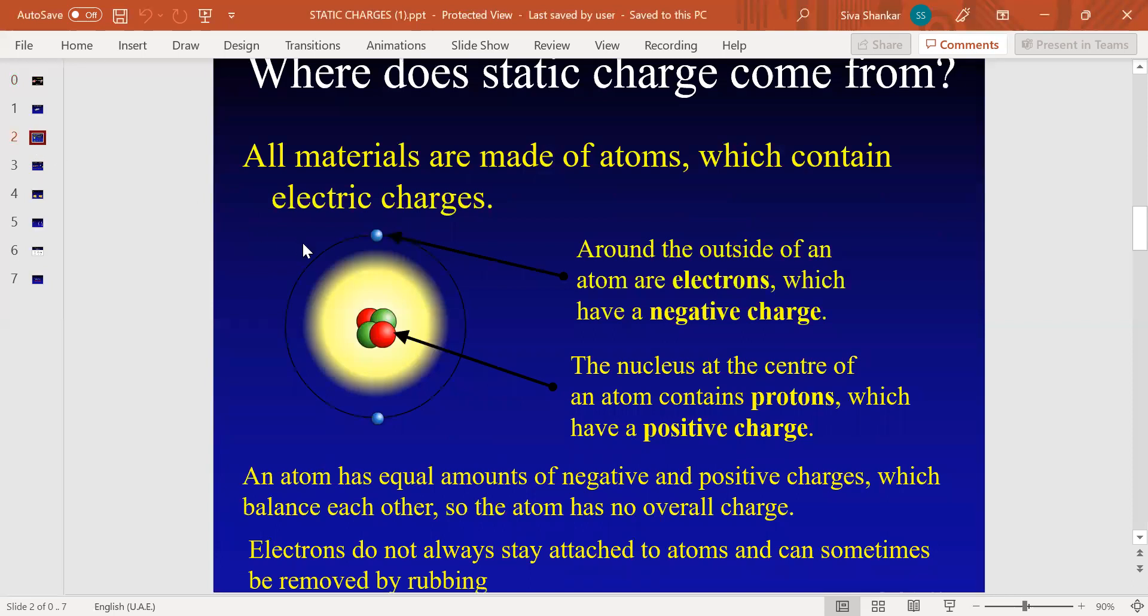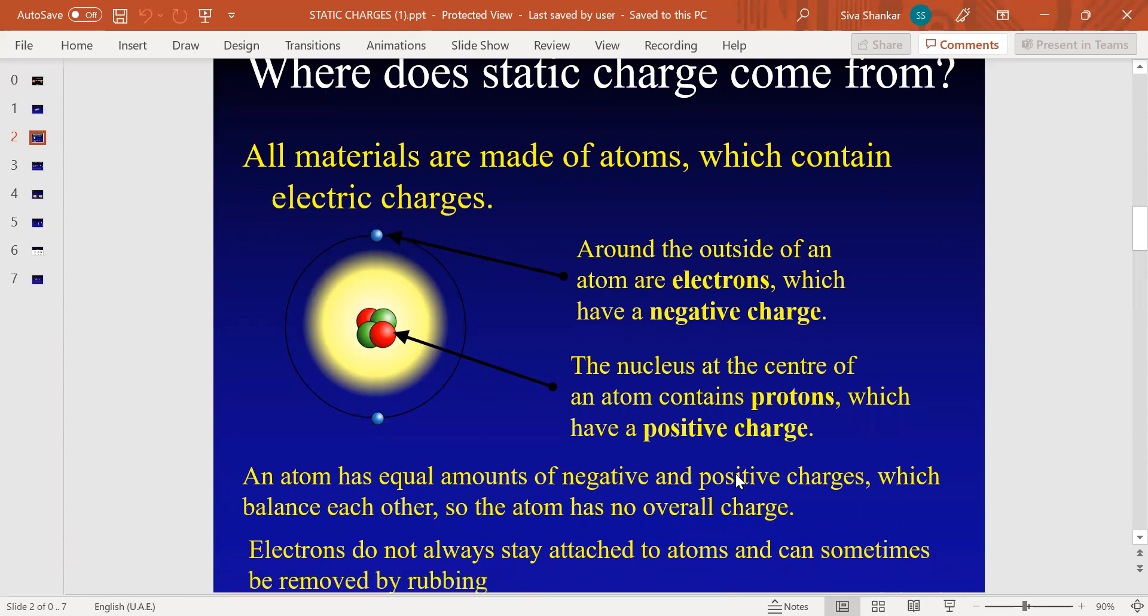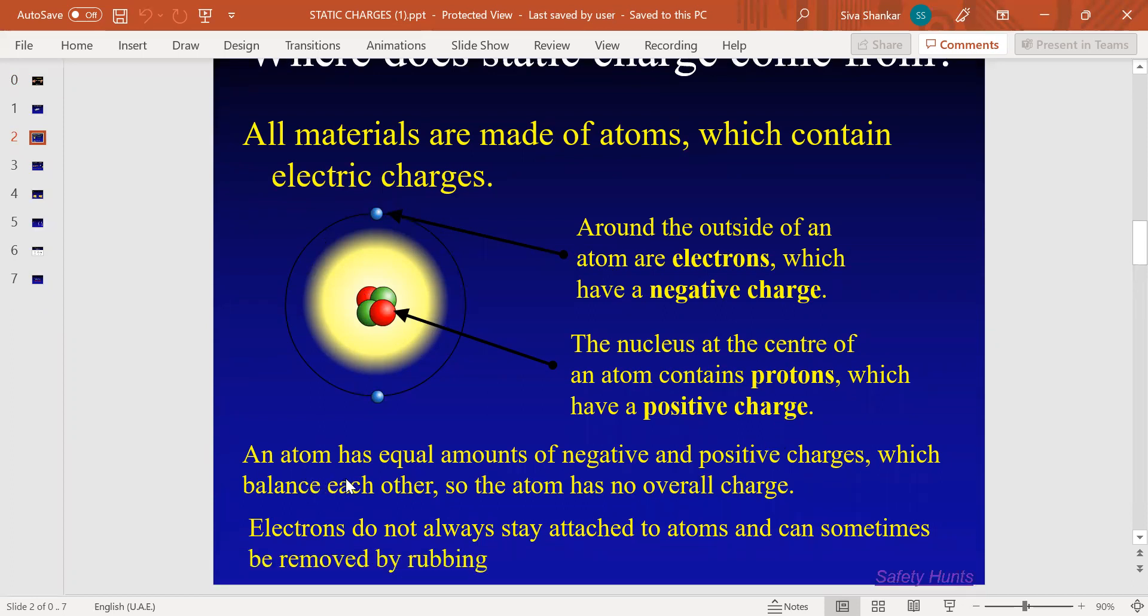Now we will see where static electricity comes from. We all know atoms are all around us and have electric charges. The outermost part of the atom contains electrons, which are negatively charged. The center part, the nucleus of the atom, contains protons which are positively charged.